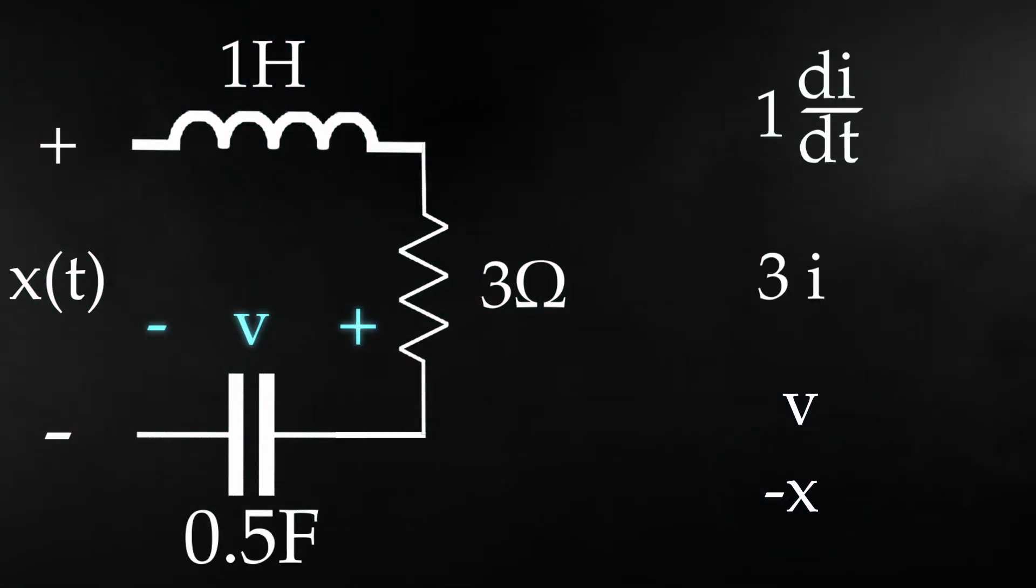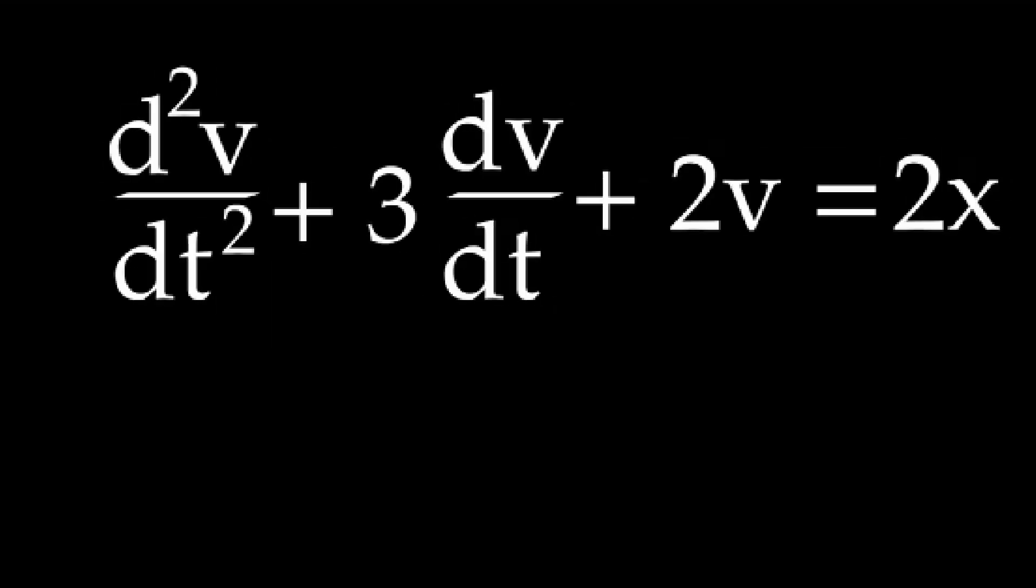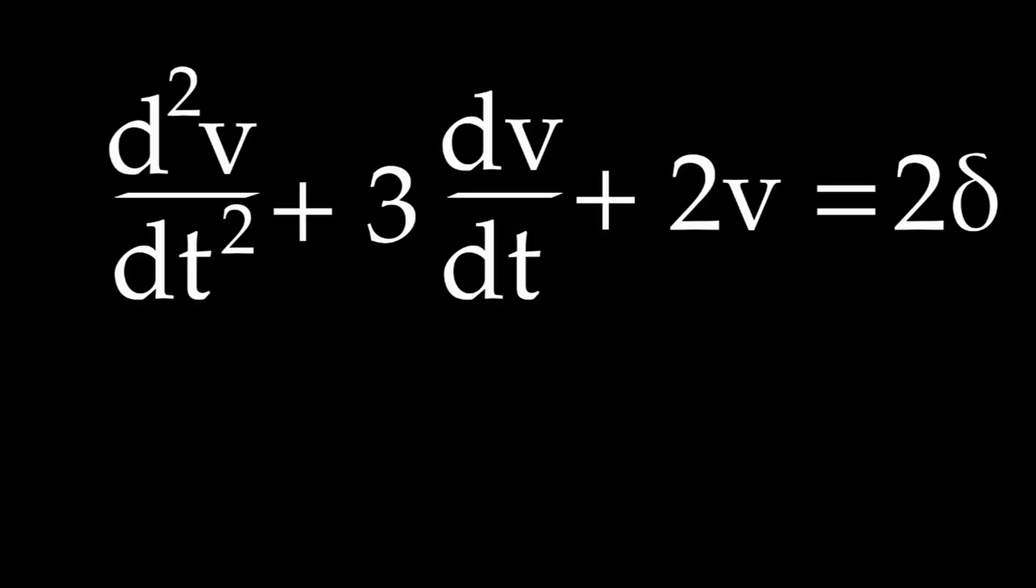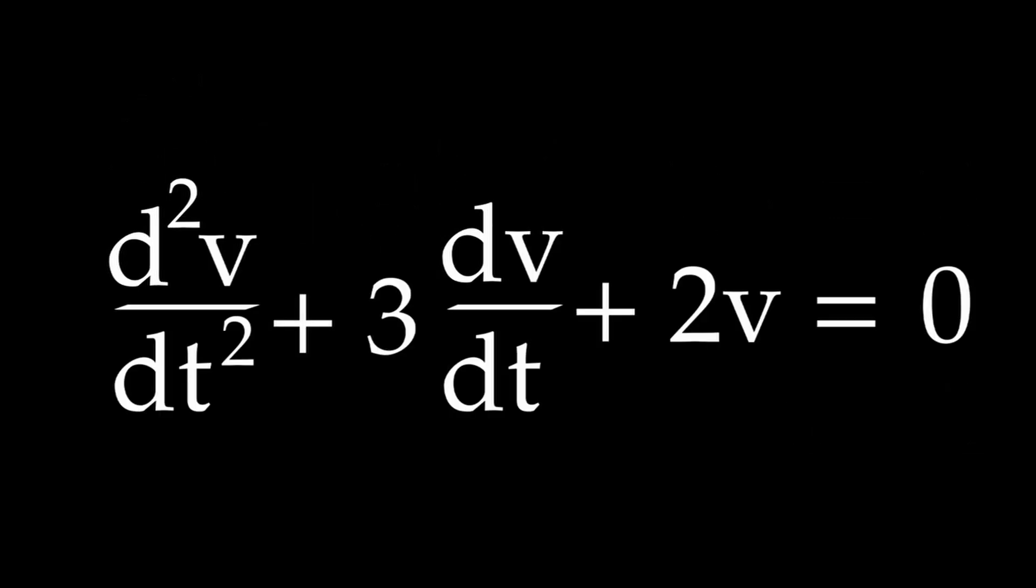That was a lot, so let's do a quick recap of everything. The circuit will give us a linear time-invariant equation. Instead of solving this, we solve for the input as the delta function first. Obviously, before t equals zero, this is zero. Afterwards,